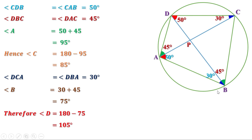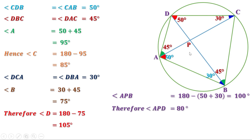Consider angle APB. The sum of the three angles of triangle APB is 180 degrees. This angle is 50 degrees and this is 30 degrees. Therefore angle APB equals 180 minus (50 plus 30), or 180 minus 80, which equals 100 degrees. The supplementary angle to this is 80 degrees. Now, vertically opposite angles are equal, so angle CPD is also 100 degrees, and similarly angle BPC equals 80 degrees.